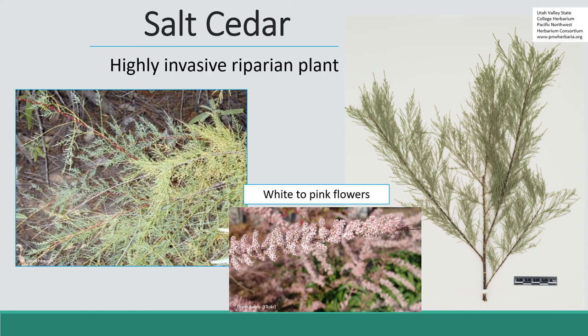Salt cedar has really deep roots — it goes way down into the soil, pulls up salt, and deposits it on the leaves. When the leaves fall down in the fall — it's deciduous — that salt ends up on the soil surface. Very few plants can tolerate high concentrations of salt, so it creates an area with no vegetation underneath it. It's a plant that animals really can't eat because of the high salt, and we can't use targeted grazing to control it either.